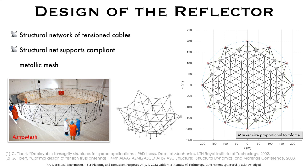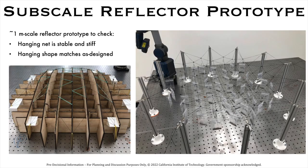Our reflector's design is inspired by the astromesh antenna, which includes a network of tension cables that support a compliant mesh. We built a 1 meter model to show this approach of tensioning the wires using gravity loading indeed works well.